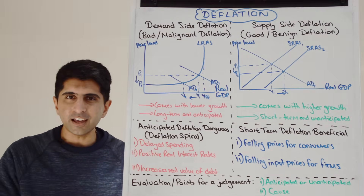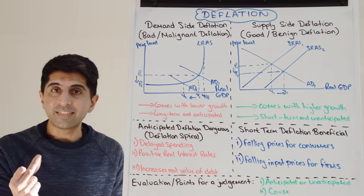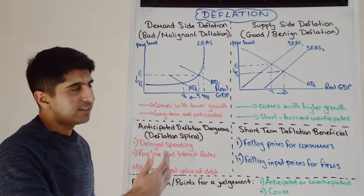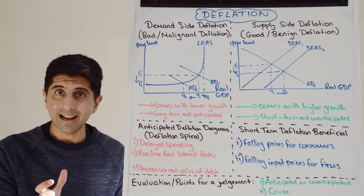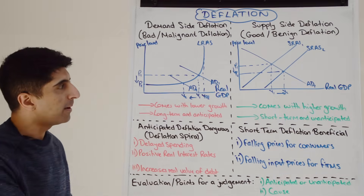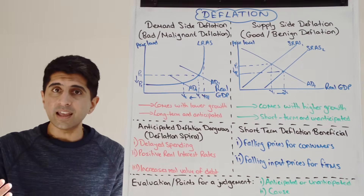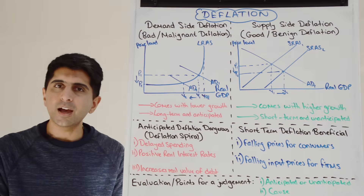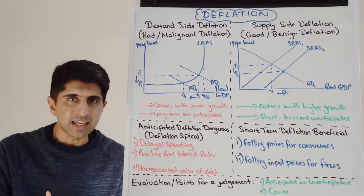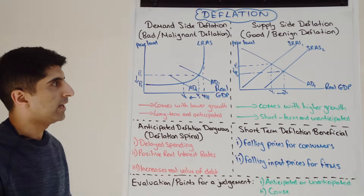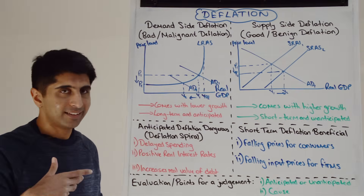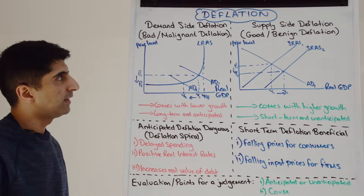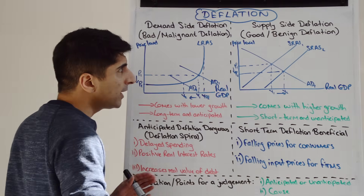...recessions don't just go away like that — they take time and last for a while. Therefore if deflation is resulting as well, it could last at the same time. Even though there are policies to boost AD and get economies out of recession, they take time to work. So deflation could be long-term here and therefore could become anticipated and expected.